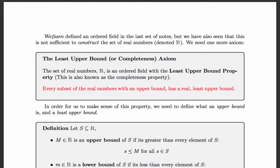Well, what about irrational numbers? What about the square root of 2? We would like for that to be a number. So in fact, to build the real numbers, we need one more axiom. We need the least upper bound property, also called the completeness property or axiom. The set of real numbers is an ordered field that has the least upper bound property.